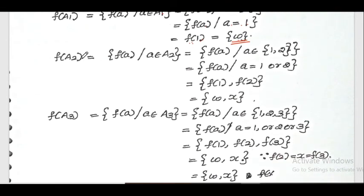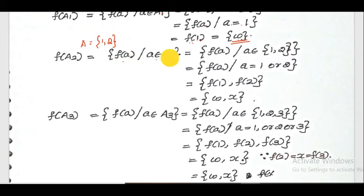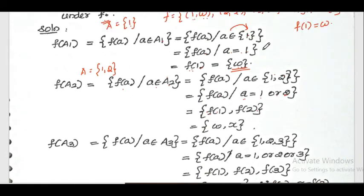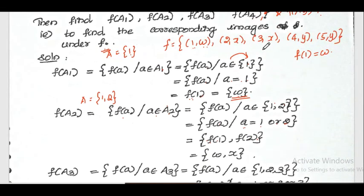For f(A2): A2 = {1, 2}, so a takes the value 1 or 2. Substituting, f(A2) = {f(1), f(2)}. From the given relation, f(1) = w and f(2) = x. Therefore f(A2) = {w, x}.